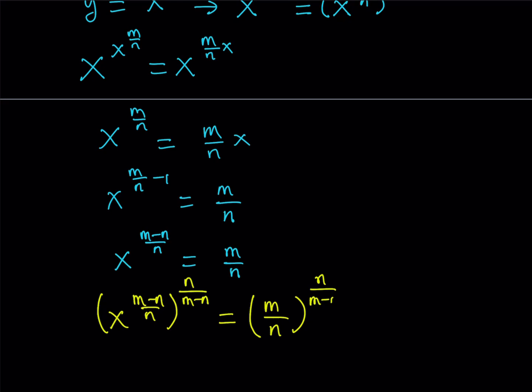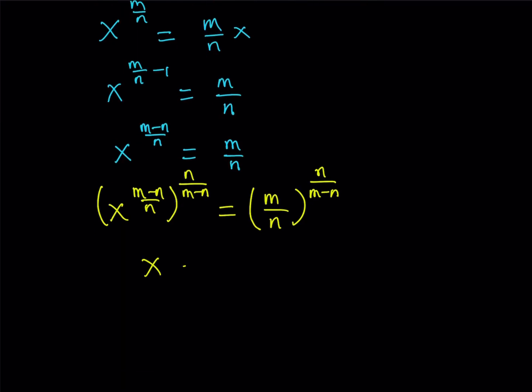So then, from here, I'm basically getting x is equal to m over n to the power n over m minus n. Again, m and n are different, so m minus n is never 0, n is not 0, m is not 0, so on and so forth. So that's the x value.